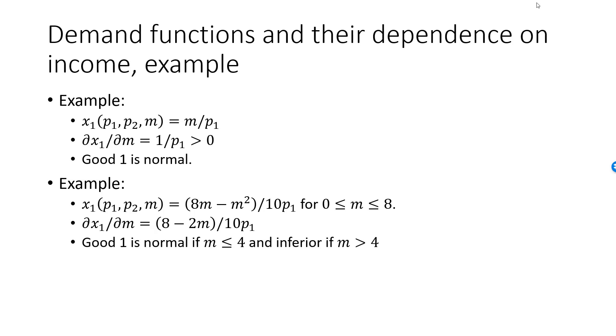Since 8 minus 2m is greater than or equal to 0 when m is less than or equal to 4, good 1 is normal for levels of income up to 4 units. For m greater than 4, the partial derivative is negative and x1 is strictly decreasing in m and x1 is inferior.